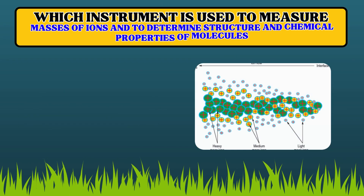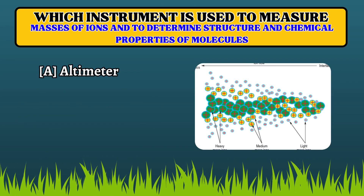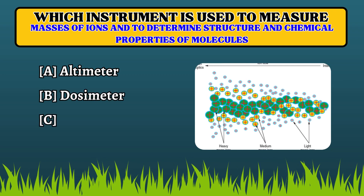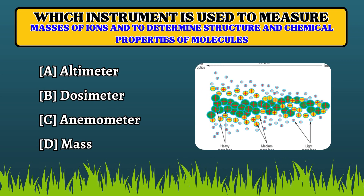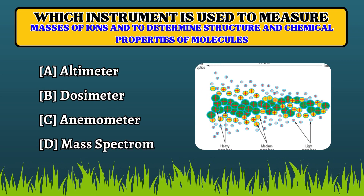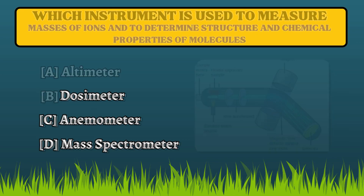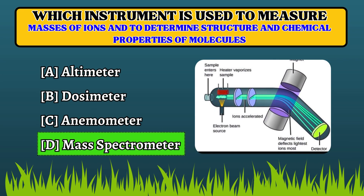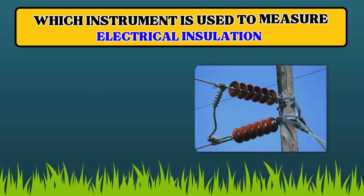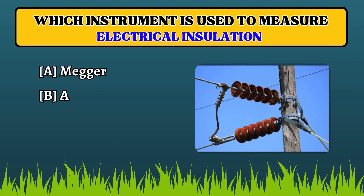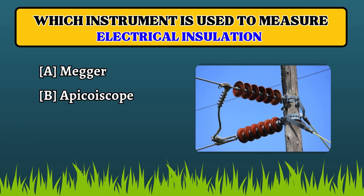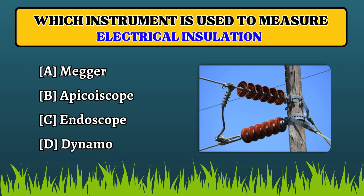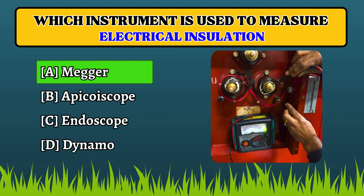Which instrument is used to measure masses of ions and to determine the structure and chemical properties of molecules? Mass spectrometer. Which instrument is used to measure electrical insulation? Megger.